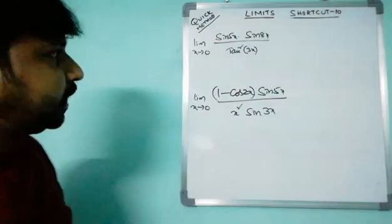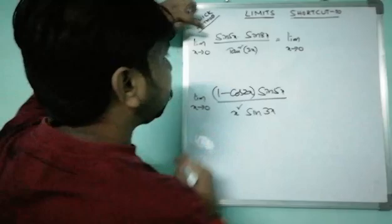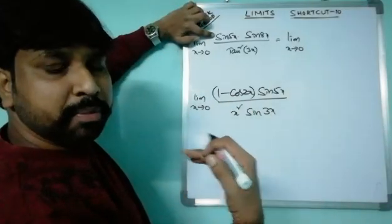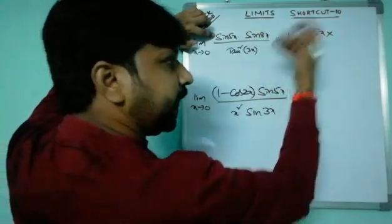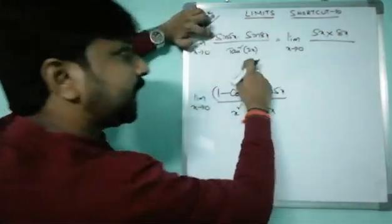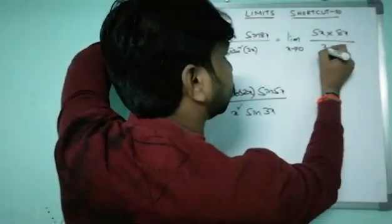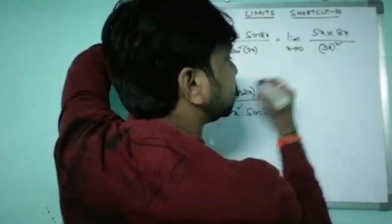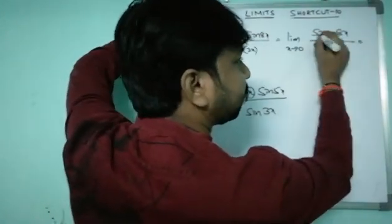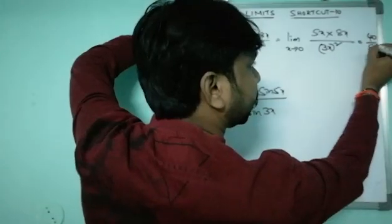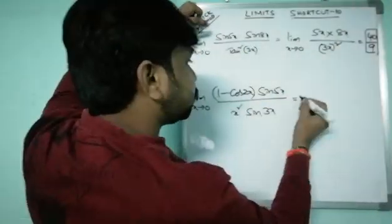Next question: lim x→0 sin(5x) · sin(8x) / tan²(3x). For sin(5x): write /5x × 5x. For sin(8x): write /8x × 8x. For tan²(3x): write /(3x)² × (3x)². The x·x = x² and x²·x² cancel. Answer is 5 × 8 / 3² = 40/9.